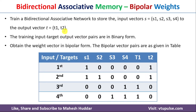This is the problem definition. We need to train the bidirectional associative network to store the input vectors S equal to S1, S2, S3, S4, and two output vectors T equal to T1 and T2. The training input and target output vectors are in binary form, and we need to obtain the weight vector in bipolar form. This is the dataset given to us.